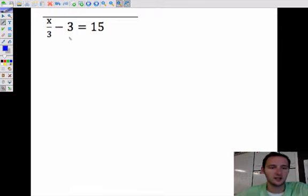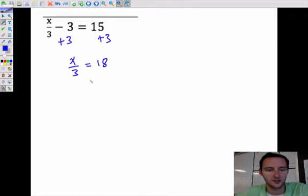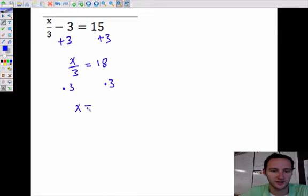Next one, I want to get rid of this minus 3 first, so I'm going to add 3 to both sides. That gives me x over 3 equals 18. You can think of it as 1/3 times x or x divided by 3. To get rid of this over 3, we just multiply both sides by 3. That gives me x equals 54.